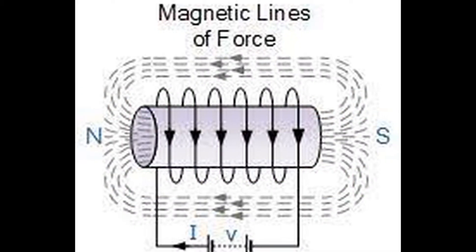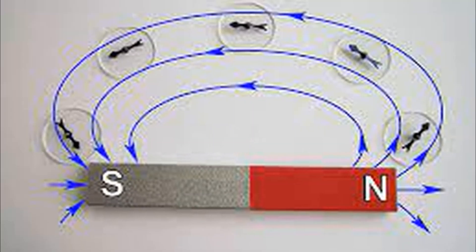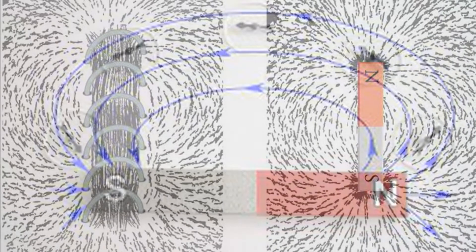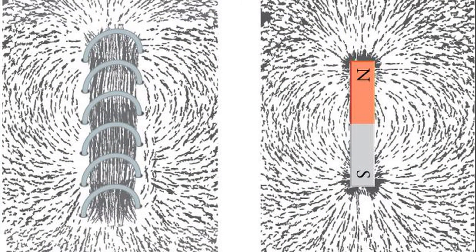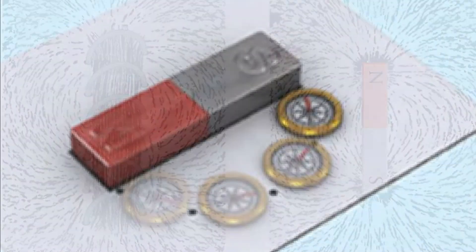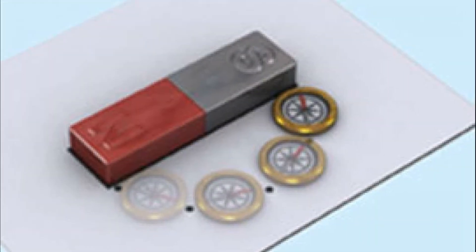Magnetic Lines of Force. Perform a simple experiment. Place a bar magnet on a flat surface. Sprinkle iron fillings uniformly over it and gently tap it. The iron fillings are seen to arrange themselves along curved paths. The lines show the direction in which a compass would point when placed near the magnet.